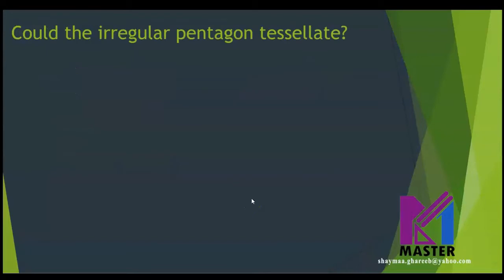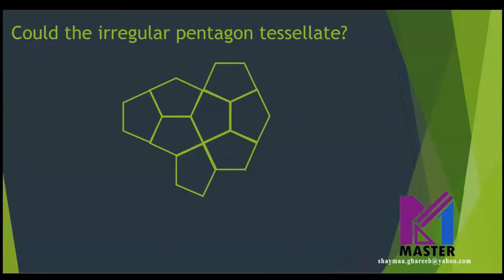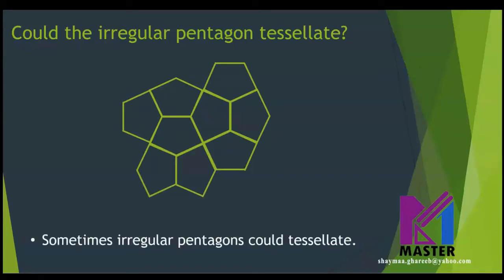Now let's try an irregular pentagon. Could the irregular pentagon tessellate? We said that the regular pentagon cannot tessellate. What about an irregular pentagon, such as this one? Let's try. As you can see, it could tessellate. But are all irregular pentagons able to tessellate? No — it depends on the case. So sometimes irregular pentagons could tessellate, sometimes not always. But remember, regular pentagons cannot tessellate, and sometimes irregular pentagons could tessellate.